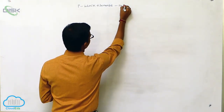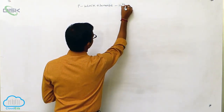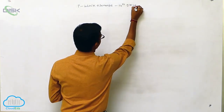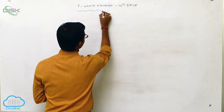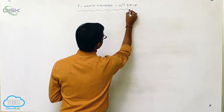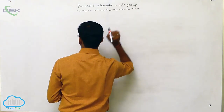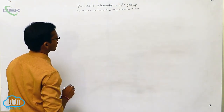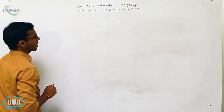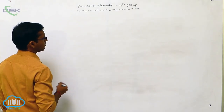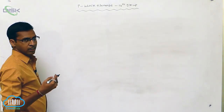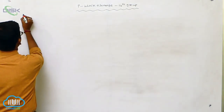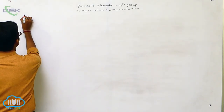For the 14th group or 4th A group, these elements are called the carbon family because their starting element is carbon. Now in that we discuss some important compounds of carbon and silicon.